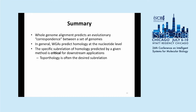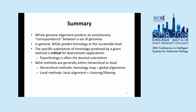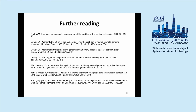Accuracy is almost secondary to knowing what subrelation you're getting. Whole genome alignments can generally be partitioned into hierarchical or local methods — hierarchical starting with a large-scale mapping between genomes, local starting with a very sensitive local alignment that gets filtered and merged. There's a growing literature on methods for refining and evaluating whole genome alignments in terms of accuracy. I'll leave you with a slide on further reading — many are reviews of the literature linking to the specific methods described today. Thank you for your attention. I'm happy to take a few questions.